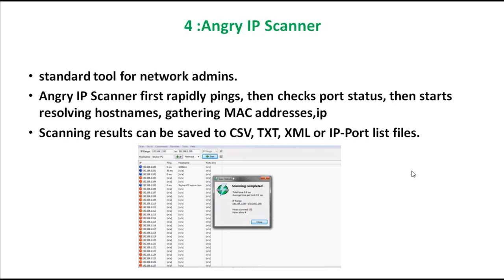The next one is called Angry IP Scanner. It is one of the best standard tools for all network admins. Angry IP Scanner rapidly pings hosts, checks port status, starts resolving hostnames, gathers MAC addresses, and collects a lot of IP addresses. When the scan is finished, it gives you the full results in a CSV, TXT, or XML file — reporting IP addresses, MAC addresses, port status, and everything.